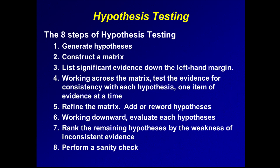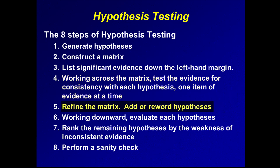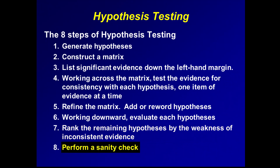Let's review the steps in hypothesis testing. First, generate hypotheses. Second, construct a matrix and list hypotheses at the top. Third, list significant evidence down the left margin — seeking contradictory and absent evidence. Fourth, test each piece of evidence for consistency with each hypothesis, working across the matrix, using C for consistent, I for inconsistent, or a question mark for ambiguous. Fifth, refine the matrix by deleting evidence consistent with all hypotheses, and reword or add hypotheses as needed. Sixth, evaluate each hypothesis and delete those with significant inconsistent evidence. Seventh, rank hypotheses by strength of inconsistent evidence — the hypothesis with the weakest inconsistent evidence is most likely. And lastly, perform a sanity check.